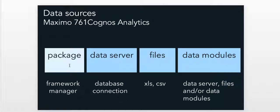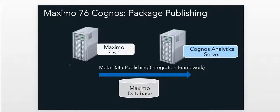Packages can be created in two different ways. First, I could open up Cognos Framework Manager and manually locate my Maximo database objects, join them together, and create my model and publish it as a package. Or the second way is I can capitalize on Maximo's integration framework, or MIF, to dynamically create those Cognos packages for me. And that's what I'm going to highlight and demonstrate today — creating a package within Maximo.